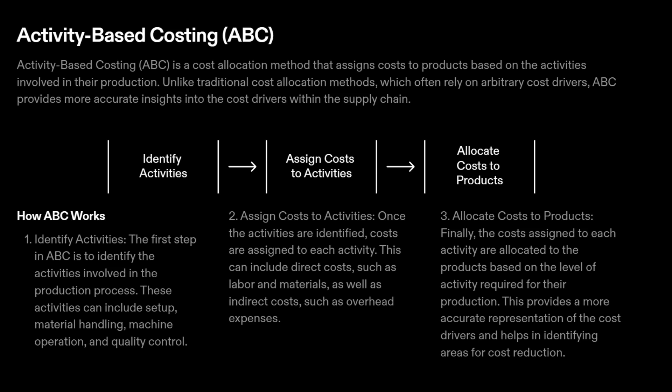Step 3: Allocate Costs to Products. The costs assigned to each activity are allocated to the products based on the level of activity required for their production. This provides a more accurate representation of the cost drivers and helps in identifying areas for cost reduction.